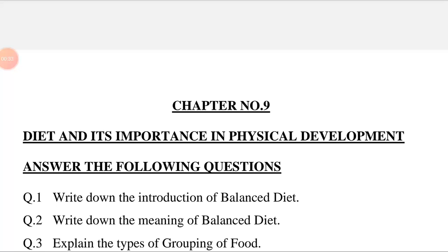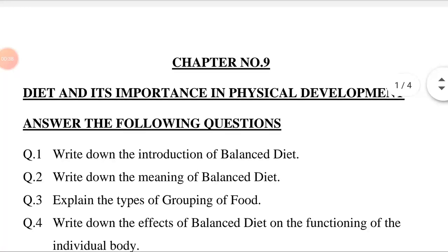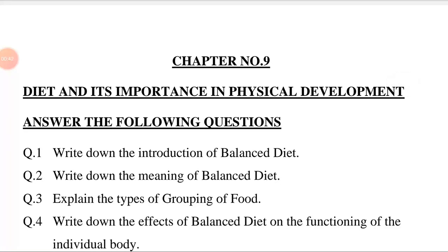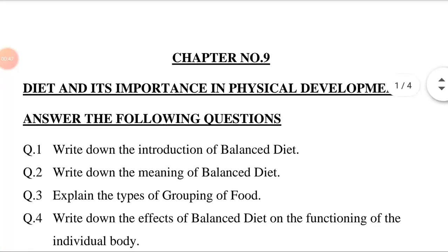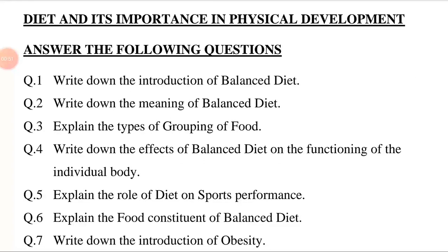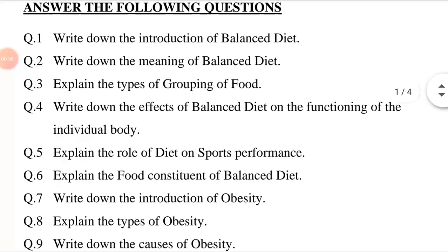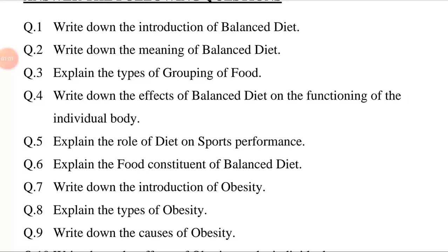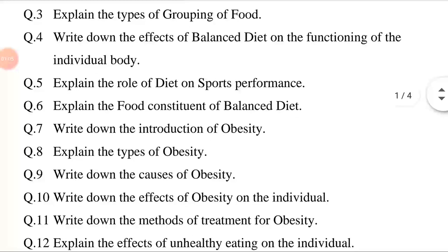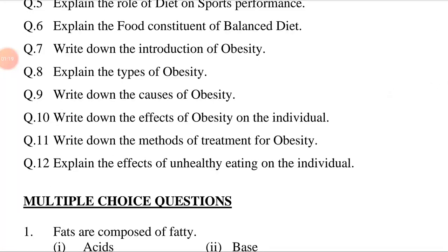First of all, we are going to discuss the answer-the-following questions: Write down the introduction of balanced diet. Write down the meaning of balanced diet. Explain the types of grouping of food. Write down the effects of balanced diet on the functioning of the individual body. Explain the role of diet on sports performance. Explain the food constituents of balanced diet. Write down the introduction of obesity. Explain the types of obesity. Write down the causes of obesity. Write down the effects of obesity on the individual. Write down the methods of treatment for obesity. Explain the effects of unhealthy eating on the individuals.